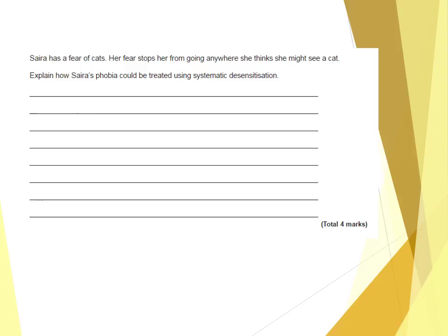She will work through that hierarchy gradually, working all the way up to holding, feeding, and stroking a cat, being in a relaxed state with each exposure. She will move up the hierarchy when she has reached a state of relaxation in response to that phobic stimulus. It is hoped that the bond between the conditioned stimulus and the conditioned response — the cat and fearfulness — will be extinguished, and she will overcome her phobia of cats.